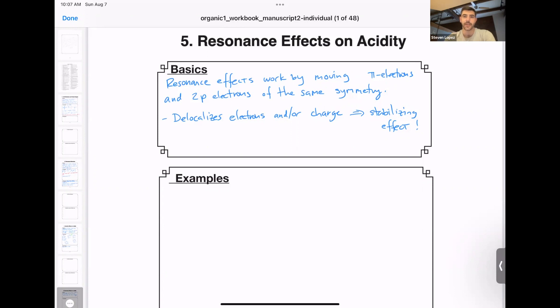So the 2p orbitals actually have to be the same symmetry. Thinking of these as two lobes of a p orbital, these two are going to be able to undergo resonance, while those that are orthogonal, px and py for example, don't participate in resonance.